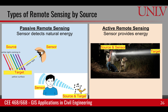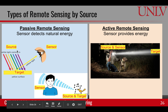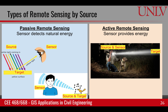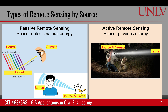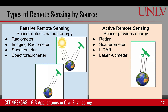The other classification is based upon the source. If we have a natural source of energy — for example, sunlight or emissions from the target itself — then it is called passive remote sensing. But if we have our own source of energy, then it's called active remote sensing. In passive remote sensing, we have radiometers, which measure radiation, and imaging radiometers. Similarly, spectrometers measure different frequencies of the radiation. In active remote sensing, we have radars, scatterometers, lidars, and laser altimeters.